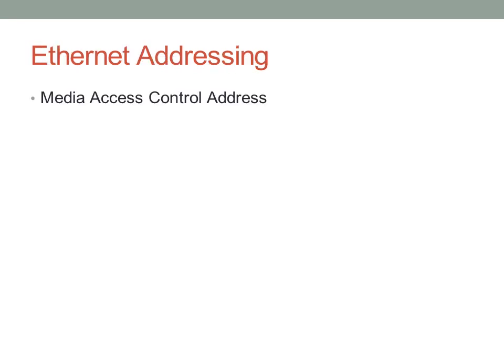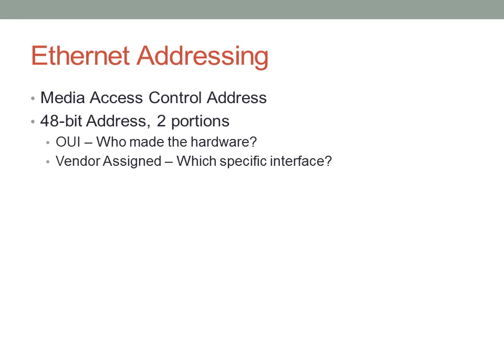Ethernet addressing is done with what we call a media access control address, also called a burned-in address. This address is 48 bits long and has two portions. The first 24 bits — the first three bytes — are called the organizationally unique identifier, or OUI. The OUI refers to who made the hardware. As you're doing packet captures, you can actually identify the manufacturer of a network card just by looking at the MAC address. For example, if you see a certain prefix, you might say that's an Apple MacBook Air. Cisco owns about 20 or so of these organizationally unique identifiers. The second part is assigned individually by the vendor.